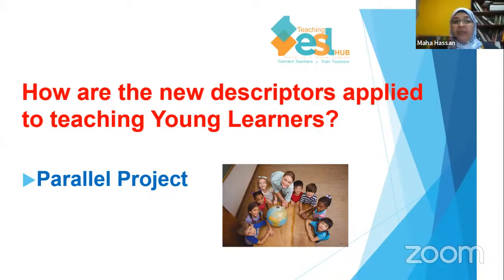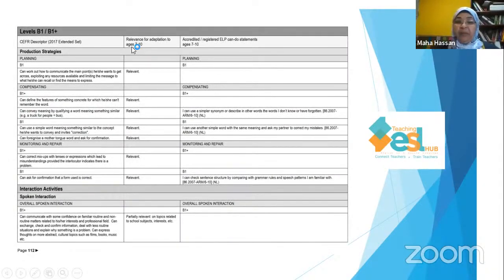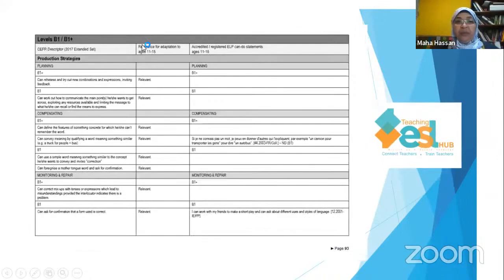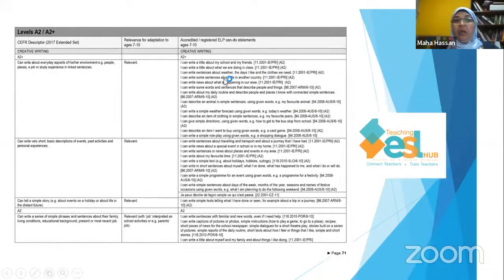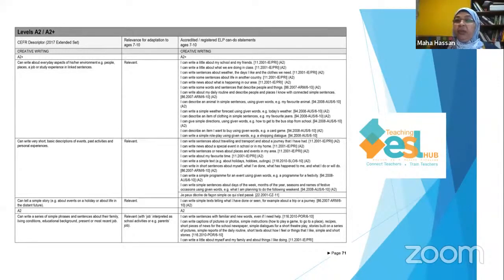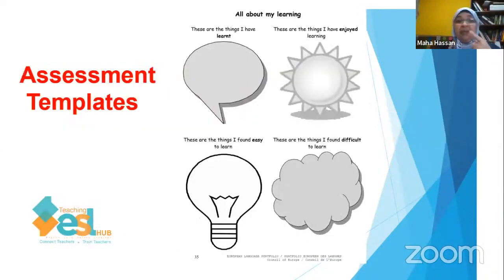We had another week where we discussed the parallel project set by the new CEFR revisions — it's for young learners, divided for teachers who taught ages 7 to 10 and teachers who taught ages 11 to 15. I gave examples of descriptors and suggestions on how to make assessment templates so teachers can assess their own students. The students themselves can also use these templates to assess how far they have developed with language learning, taking more responsibility for their own learning.